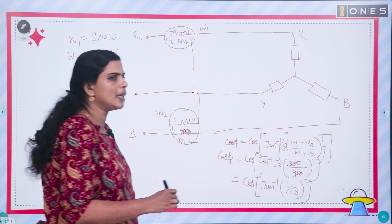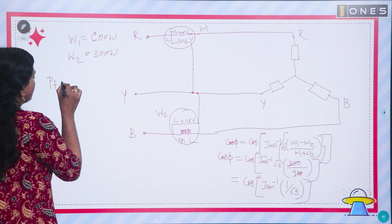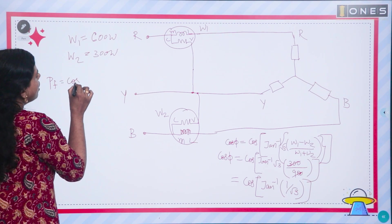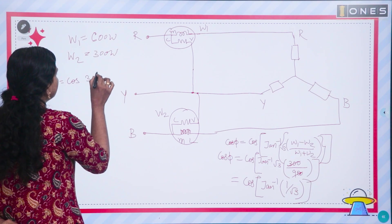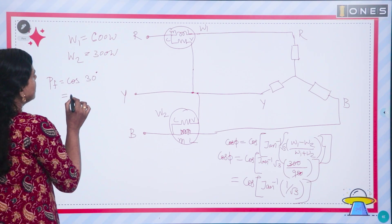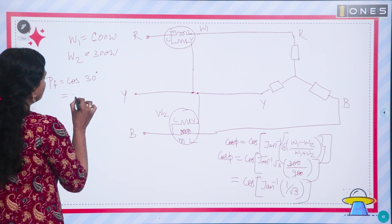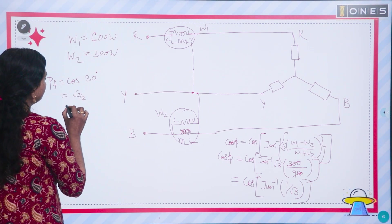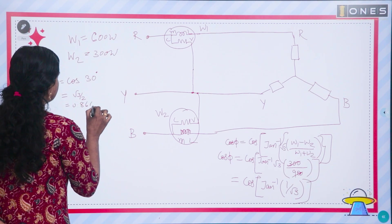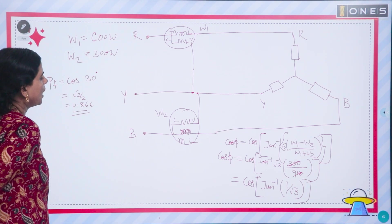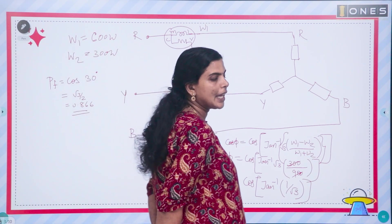Solving further: root 3 into (1/3) equals 1 by root 3. Tan inverse of (1 by root 3) equals 30 degrees. Therefore, the power factor is cos of 30 degrees, which equals root 3 by 2, or 0.866. This is the power factor.